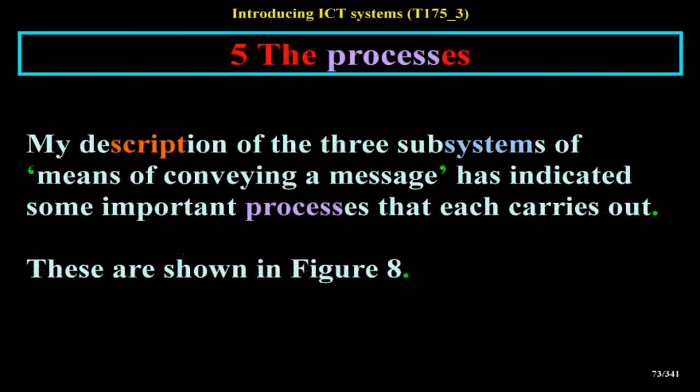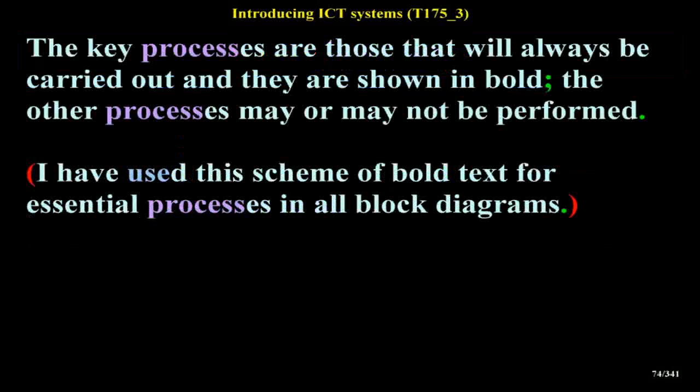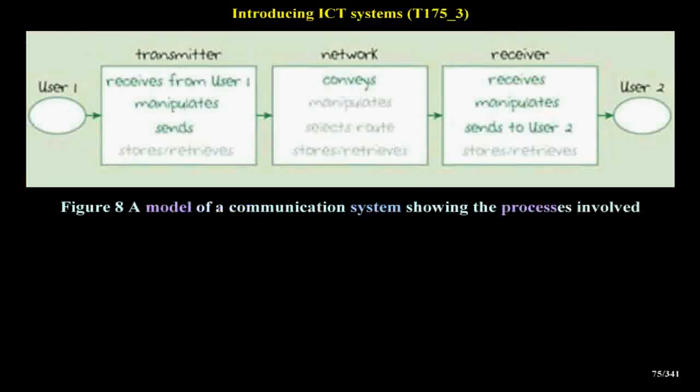My description of the three subsystems of means of conveying a message has indicated some important processes that each carries out. These are shown in Figure 8. The key processes are those that will always be carried out and they are shown in bold. The other processes may or may not be performed. I have used this scheme of bold text for essential processes in all block diagrams.